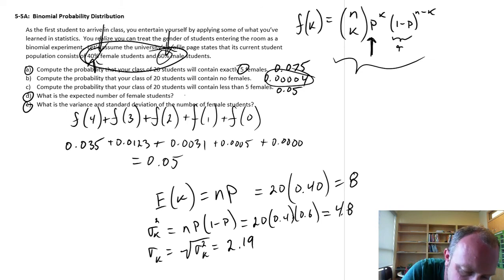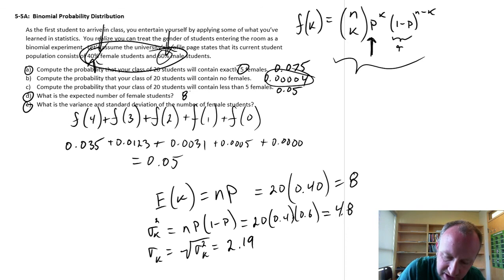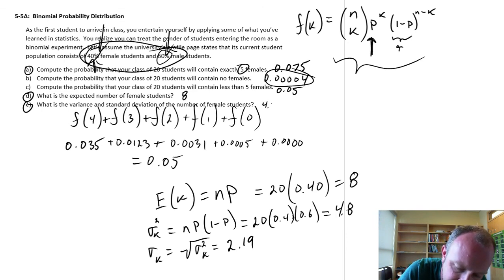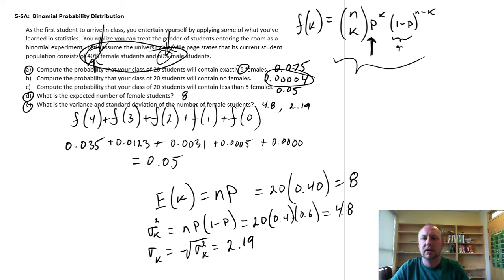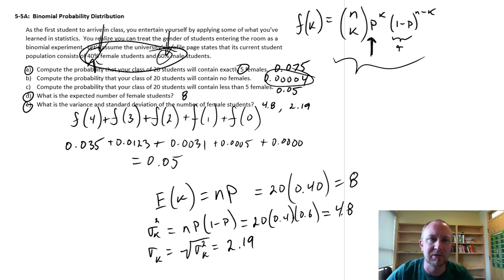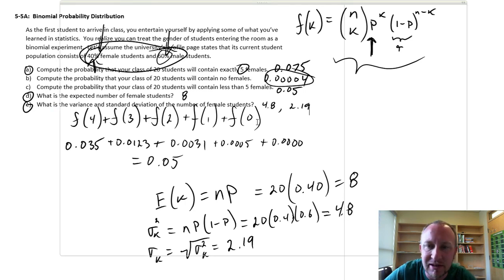There we have it: our expected value — the expected number of female students — was 8, our variance was 4.8, and our standard deviation was 2.19. A very useful application of the binomial probability distribution. Thank you very much for watching.